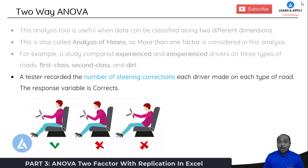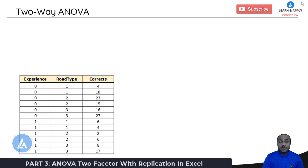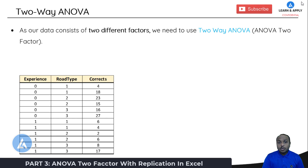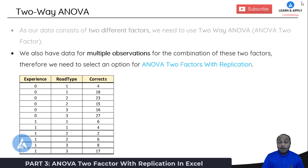A tester recorded the number of steering corrections each driver made on each type of road. The response variable is the number of corrections. The data was collected in three columns: experience of the drivers, road condition, and number of corrections. Since our data counts two different factors, we need to use two-way ANOVA, also called ANOVA two-factor. We also have data for multiple observations for each combination of these two factors.